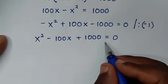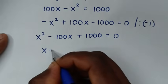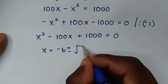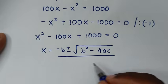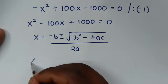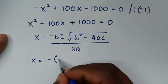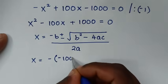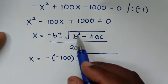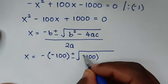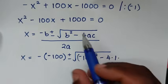From this quadratic equation, we solve using the quadratic formula: x equals negative b plus or minus square root of b squared minus 4ac, all over 2a. Here b is the coefficient of x, which is negative 100; a is 1; and c is 1000.